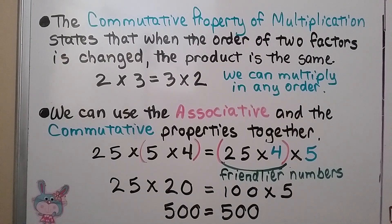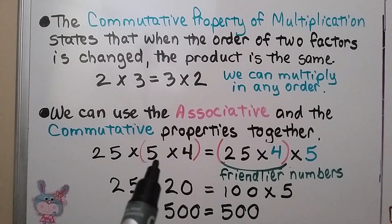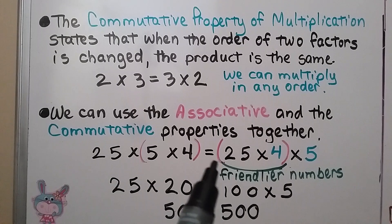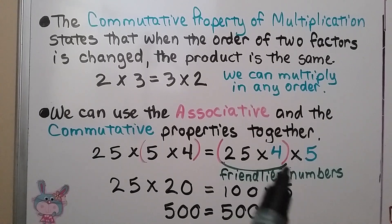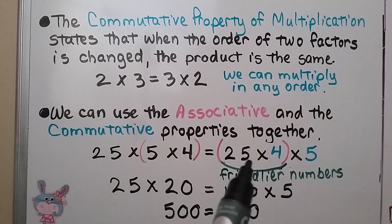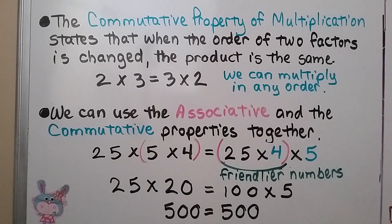The commutative property of multiplication states that when the order of two factors is changed, the product is the same. 2 times 3 is equal to 3 times 2. We can multiply in any order and get the same product. We can use the associative and commutative properties together. For 25 times 5 times 4 in parentheses, we could put friendlier numbers together — group the 25 and the 4 using the commutative property. There are four quarters in a dollar, so 4 times 25 is 100. Now we do 100 times 5, which is 500.